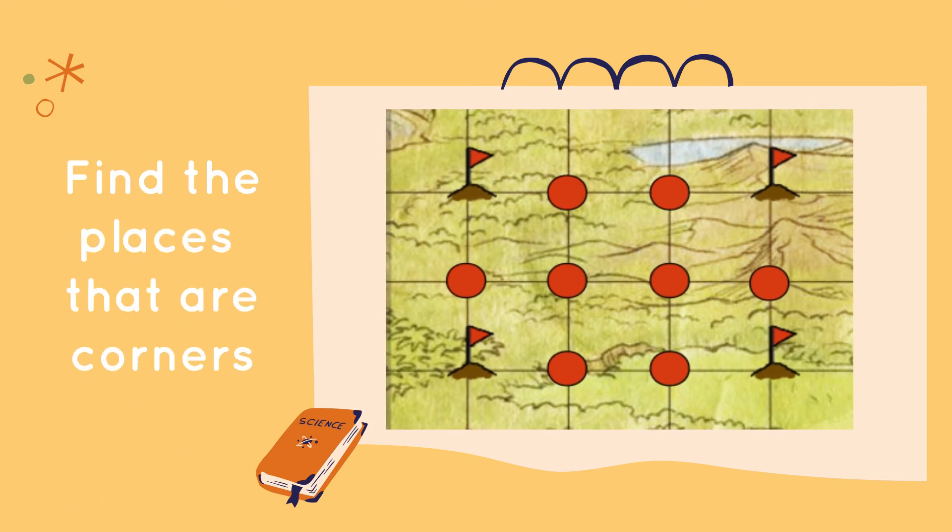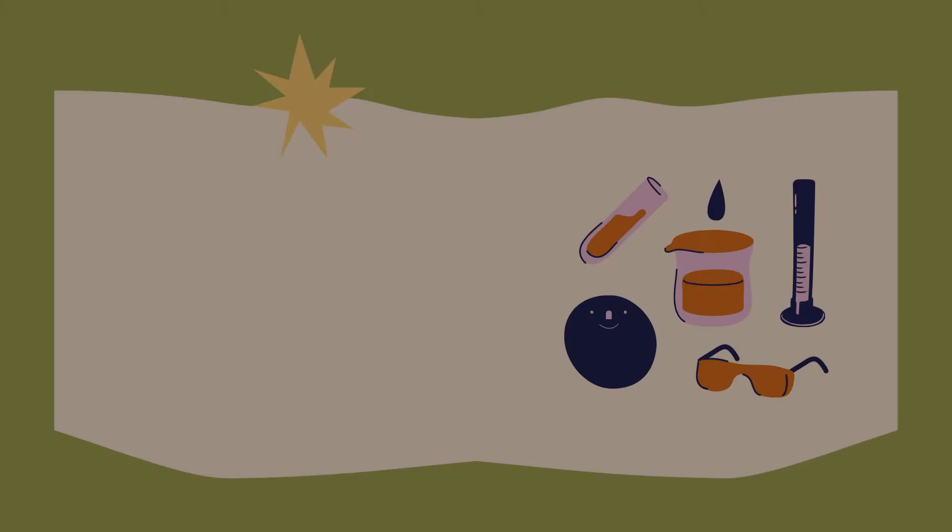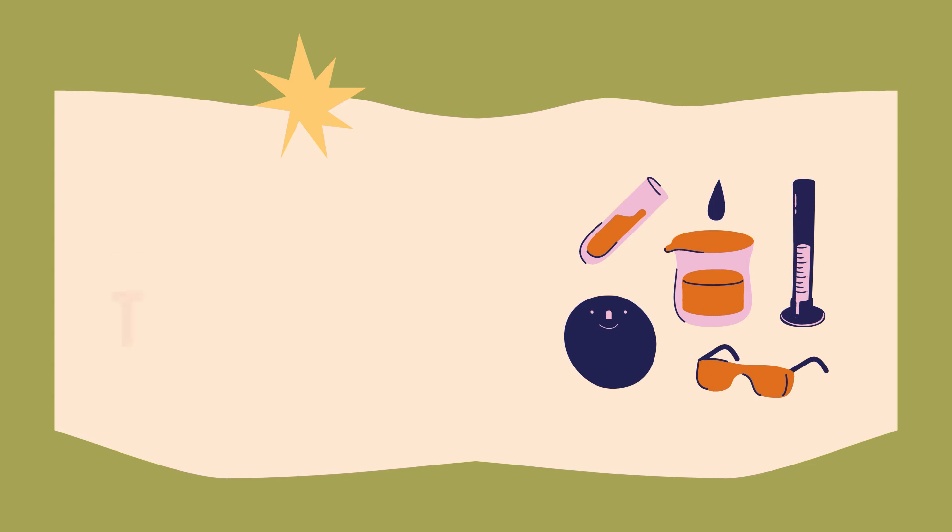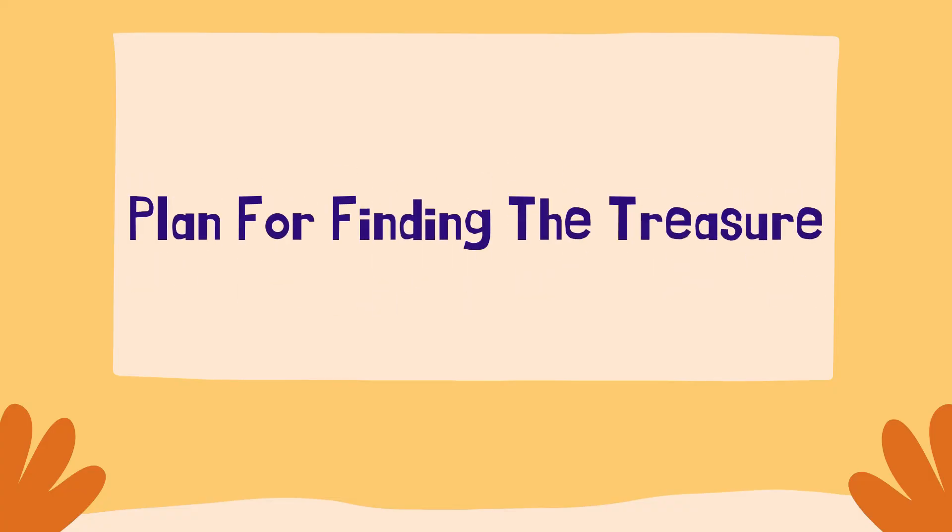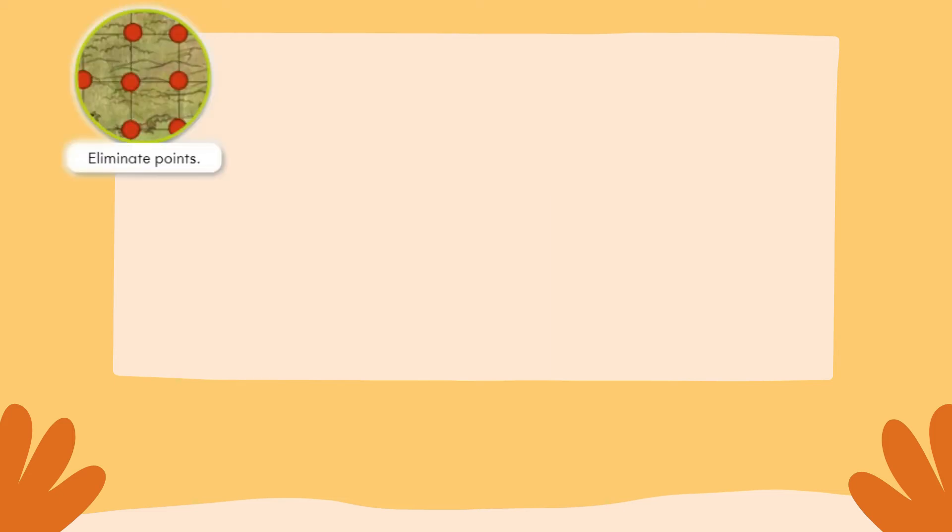We found the corners by first figuring out what places could not be corners. This is called the process of elimination. Here is our plan for finding the treasure.